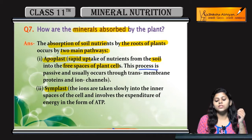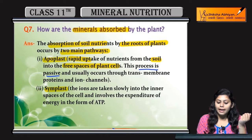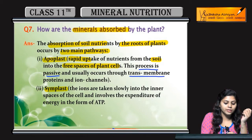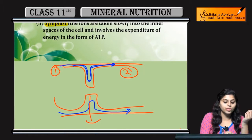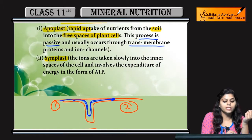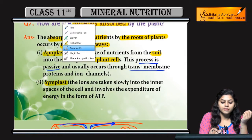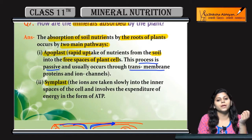This process is passive. Kooi bhi energy ki requirement nahi hooti. And hoota hai through transmembrane protein and ion channel. Transmembrane proteins ke through hoota hai, ya phir kooi ion channels ki wajah se hoota hai. Next is Symplast pathway.